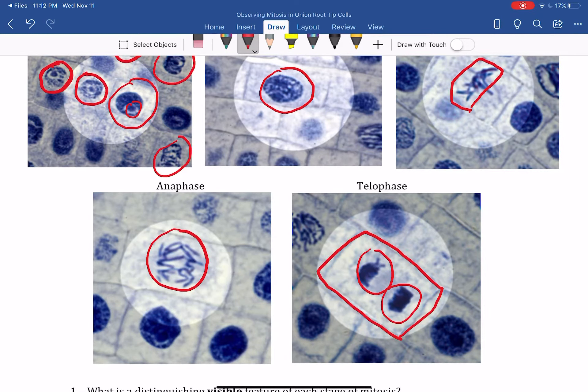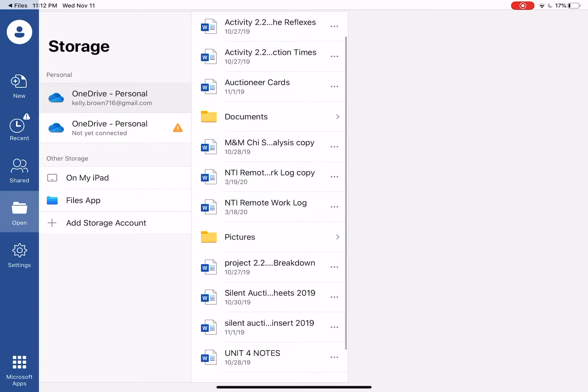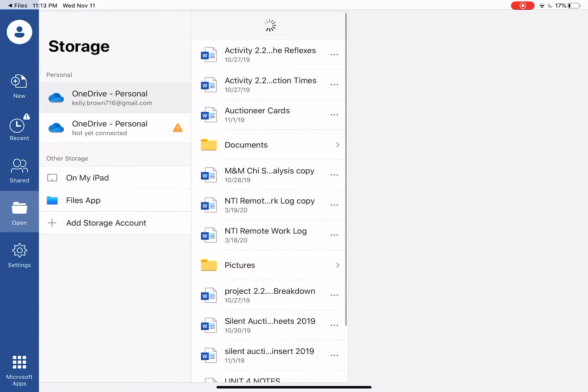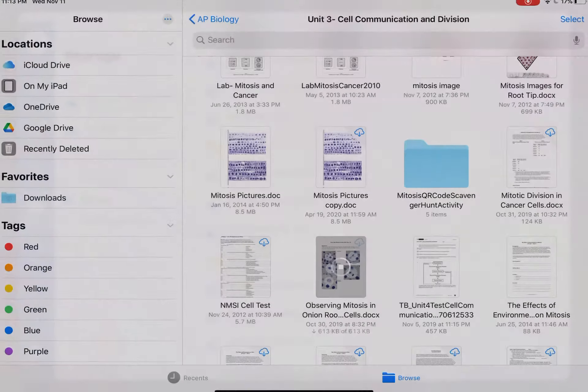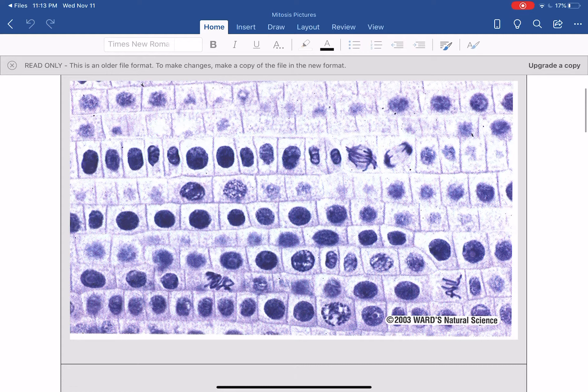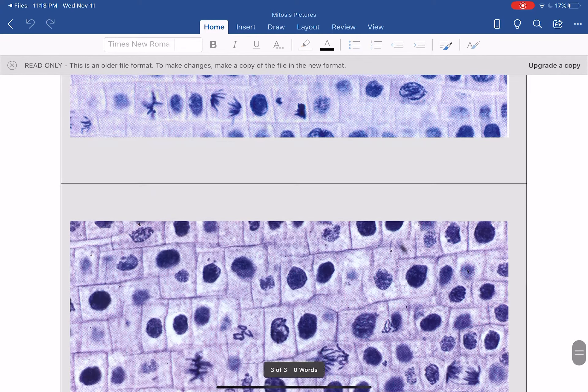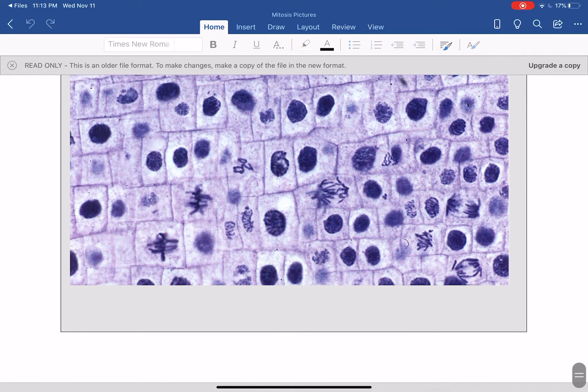So you will have some images of an onion root tip that you are going to use, images very similar to those that I just showed you. And you have to count 100 of them. So there's several cards here that you can do. It doesn't matter which cards you pick. You'll probably maybe want to get a scratch sheet of paper and kind of tally as you count.